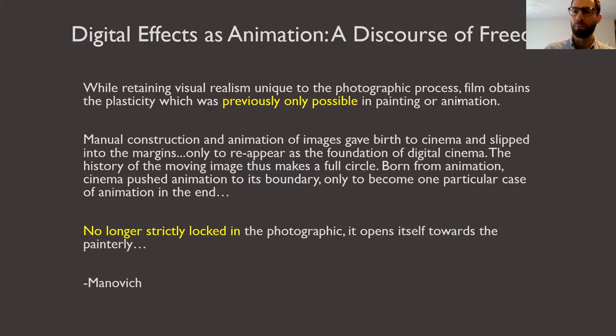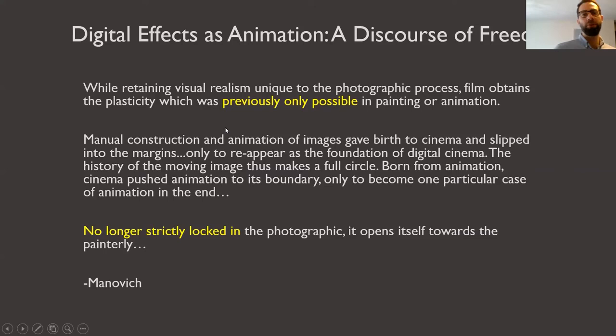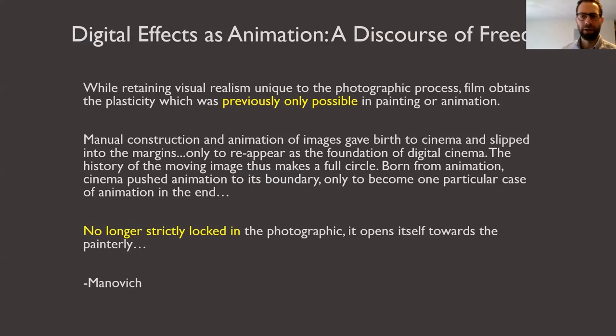He'll say: while retaining visual realism unique to the photographic process, film obtains the plasticity which was previously only possible in painting or animation. Notice there's a kind of value judgment in there — that plasticity seems like a good thing, something we lost. It used to be in animation, which is this kind of marginalized subset of cinema. Manovich wants to put animation on the map as maybe the thing that becomes the central touchstone for thinking about digital cinema. He says: manual construction and animation of images gave birth to cinema and slipped into the margins only to reappear as a foundation of digital cinema.